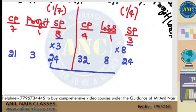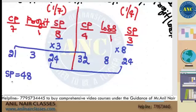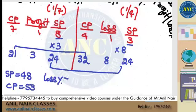I hope it is clear. Total selling price is 48. Total cost price is 53. Loss is nothing but 5 out of 53. Such an easy question.